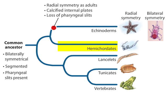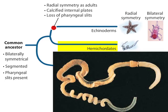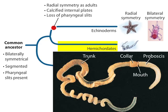Hemichordates are worm-like marine deuterostomes that, unlike echinoderms, remain bilaterally symmetrical into adulthood. Hemichordates — acorn worms and pterobranchs — have bodies organized in three major parts: a proboscis, a collar which bears the mouth, and a trunk which contains the other body parts, including pharyngeal slits. Hemichordates are more closely related to echinoderms than to other deuterostomes, and they both have ciliated larvae that in some cases appear very similar to each other.